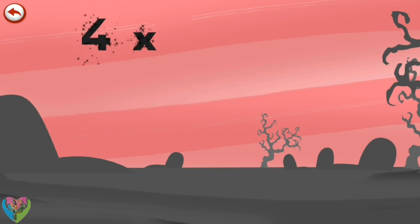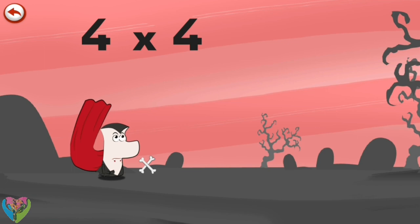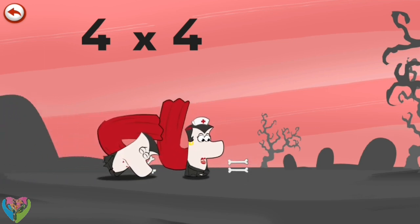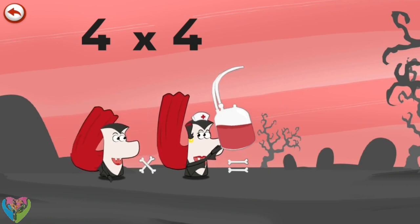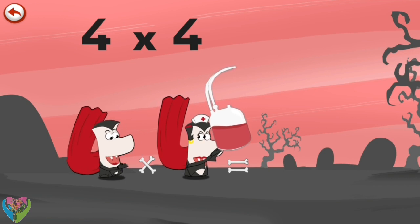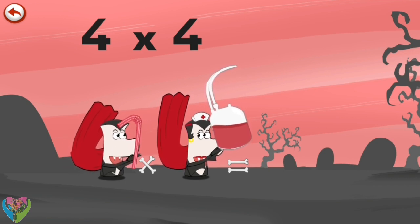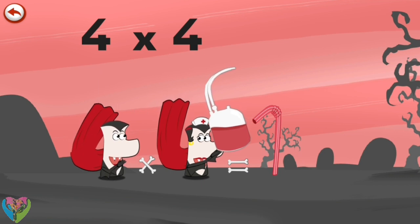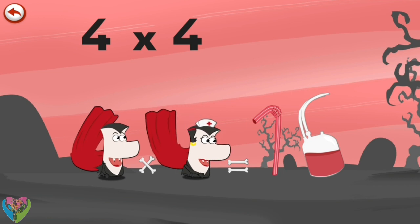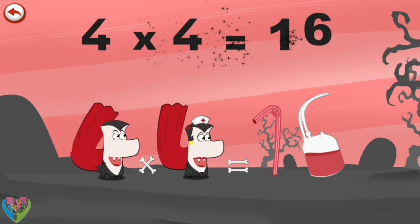What's the story of 4 times 4? When Mr. Vamp 4 wants some fresh blood, he pretends to fall over. Mrs. Vamp 4 comes to his aid with her nurse's equipment and with a fresh bag of blood. There's nothing like a little snack to bring you back to health. Mr. Vamp 4 brings out a straw in the shape of a 1 to sip from the bag of blood, which is in the shape of a 6. Drink up! 4 times 4 is 16.